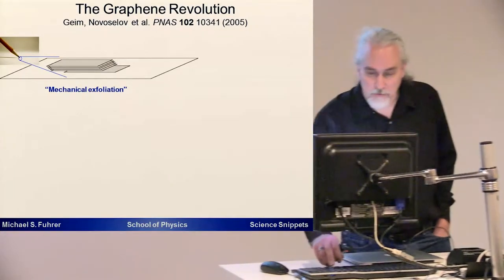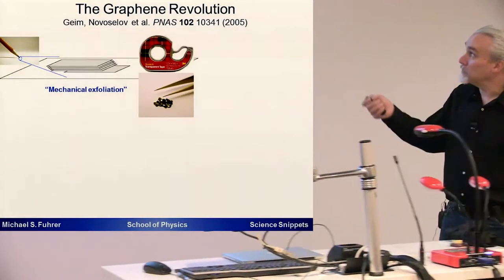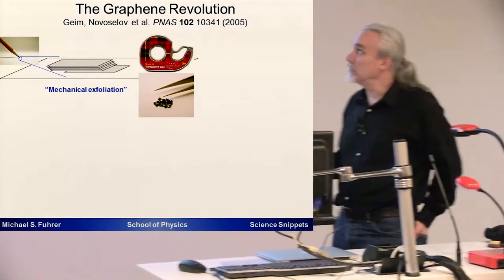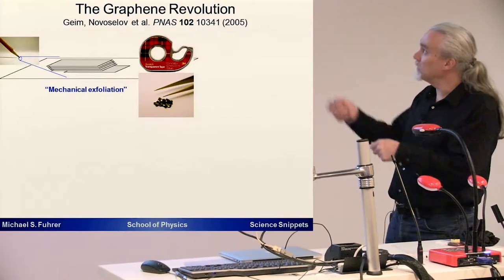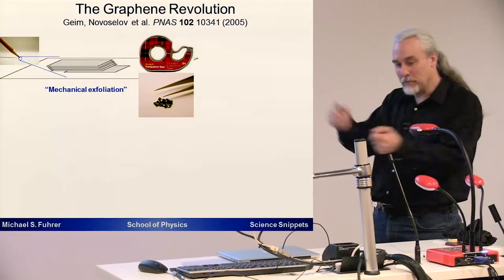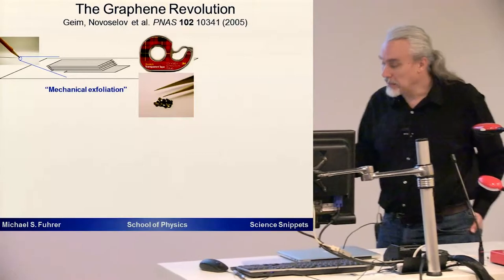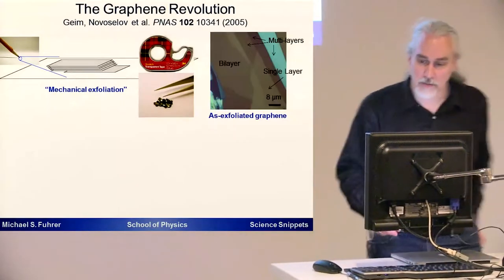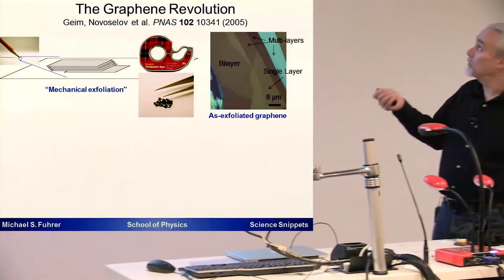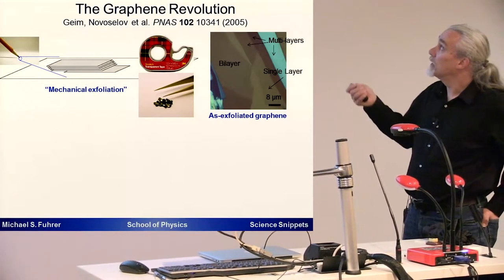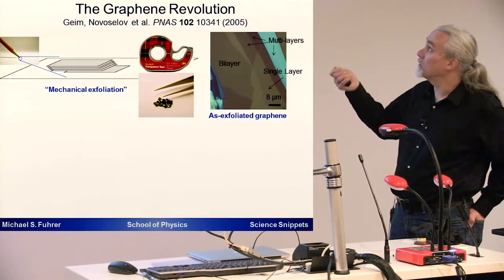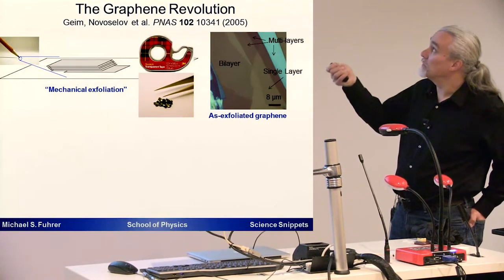We can use much more sophisticated tools to do this like scotch tape and we can get some nice crystals of graphite. And if we take the scotch tape and peel these crystals apart many times and then smear the debris on a flat surface of silicon dioxide on silicon and put it under an optical microscope we can see images like this and in fact identify areas that are just one layer of carbon thick. This is a single layer of graphene.